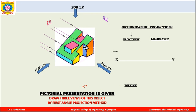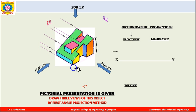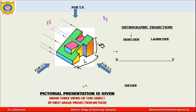Your ray of sight will be passing through all these points, and you will find that you get this particular height of the object visible to you in the front view. This height is visible and this is the length of the object which will be visible to you in the front view. So we measure this length and this height and draw a rectangle above the XY line for the front view.